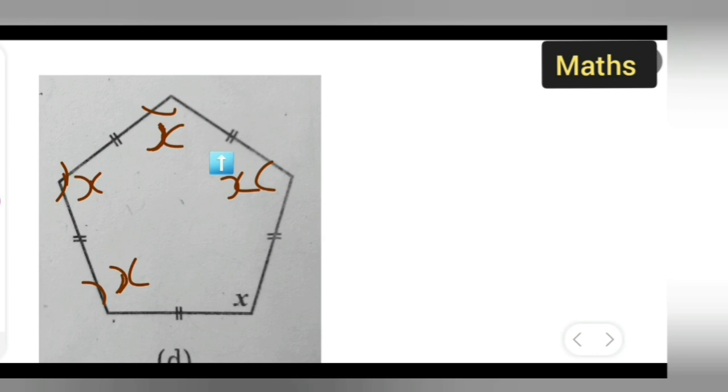So basically what we need to do is we need to add all this x - one, two, three, four, five - is equal to 540. It is right, 540 degrees.